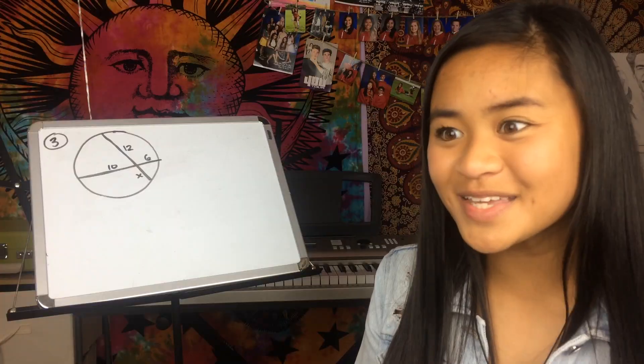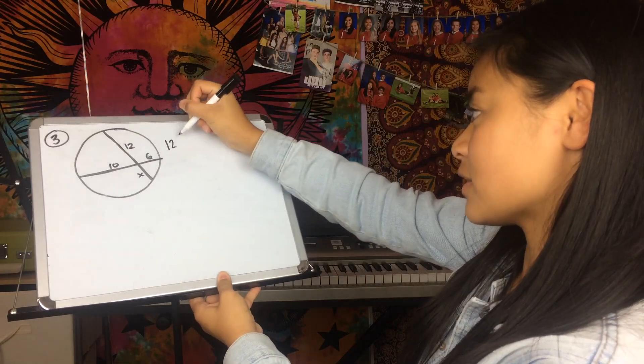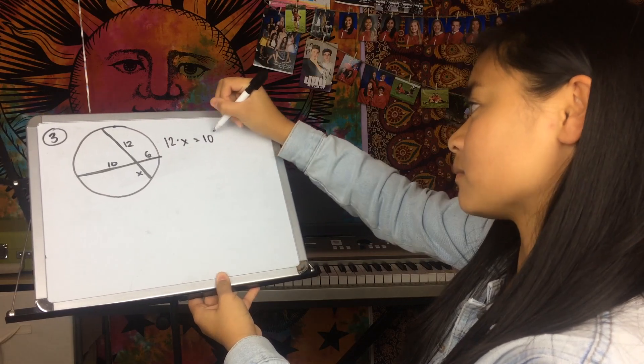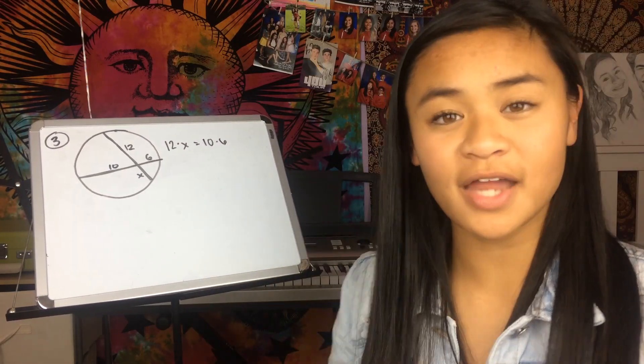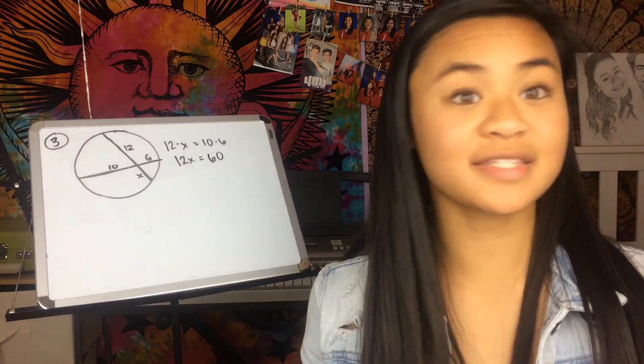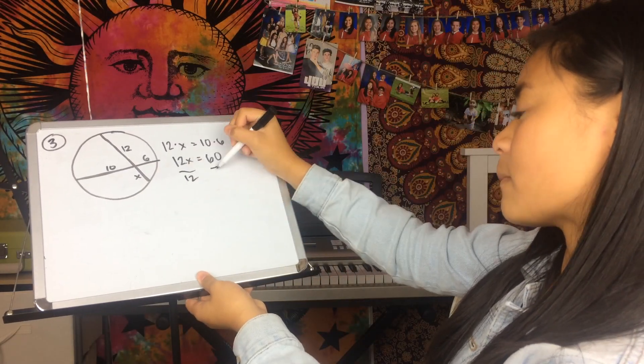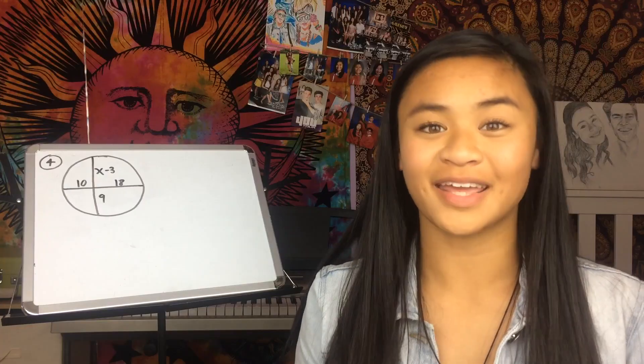Amazing! Good job. Now let's put this in: 12 times x equals 10 times 6. After that, multiply: 10 times 6 equals 60, giving us 12x = 60. What's the next step? You divide by 12 — perfect! Divide both sides by 12, and x equals 5.